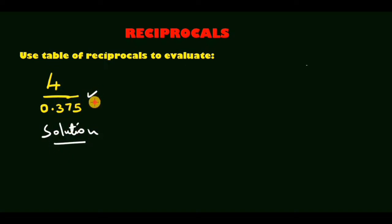This can be written as 4 into 1 over 0.375. That is, we have factored out 4, and then within the brackets we have 1 over 0.375.